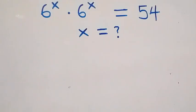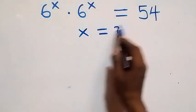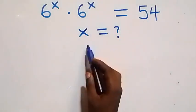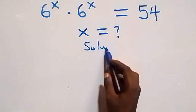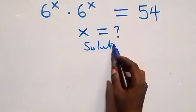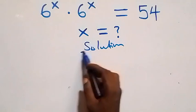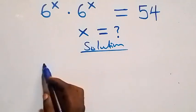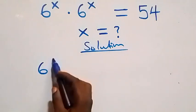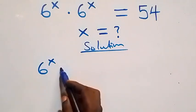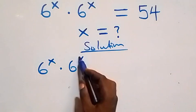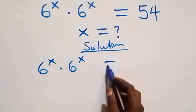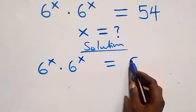Hello, you are welcome. How to solve this nice exponential equation. What we have here is six raised to power x times six raised to power x equals to fifty-four.